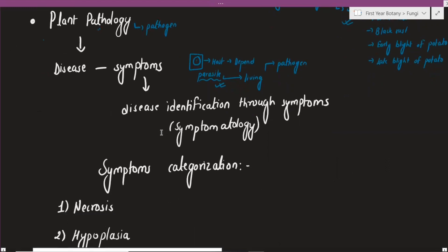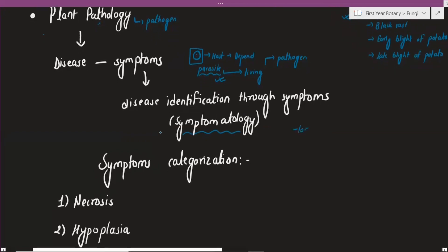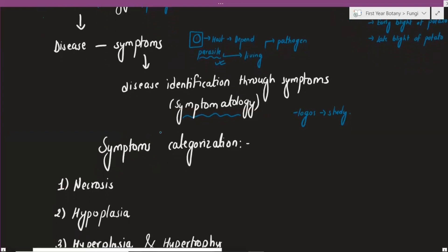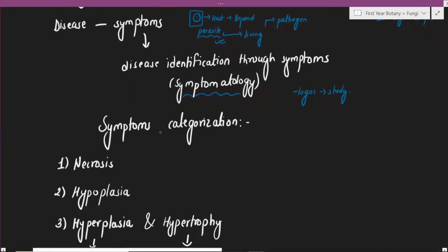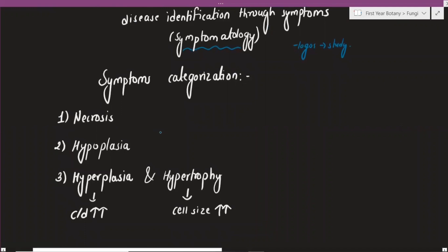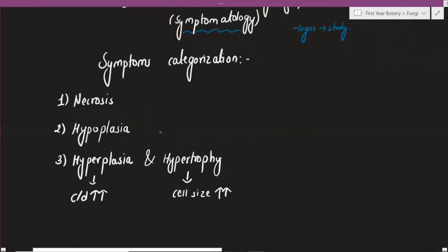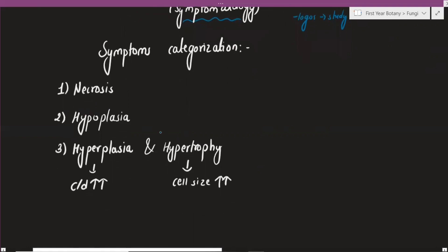That is better named as symptomatology. Now we have to get into this term — we have to categorize the symptoms. It is categorized as necrosis, hypoplasia, hyperplasia, or hypertrophy. The first one is necrosis, the second one is hypoplasia, and the third one is hyperplasia.